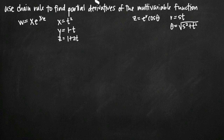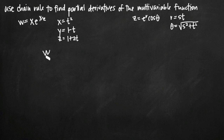When you're using chain rule to find partial derivatives of a multivariable function, I highly recommend you make a quick tree diagram to help make sure you don't miss anything. You're going to start with the function in terms of w. w is defined in terms of x, y, and z, so your tree diagram is going to have x, y, and z — however many variables are included in the equation for w.